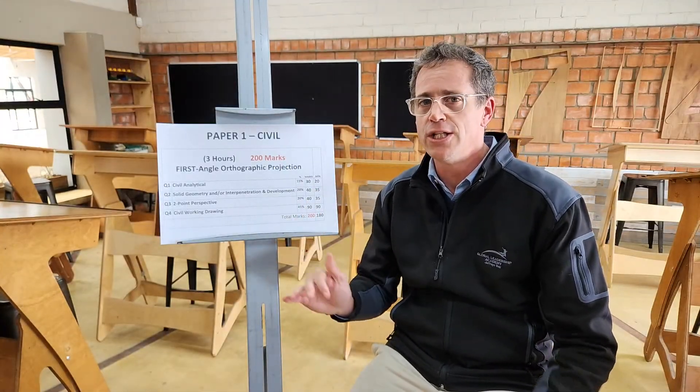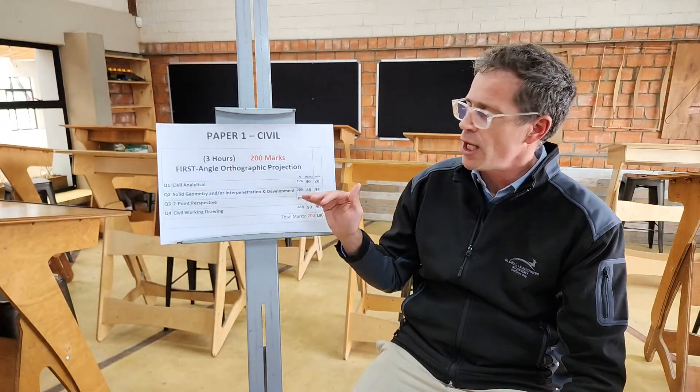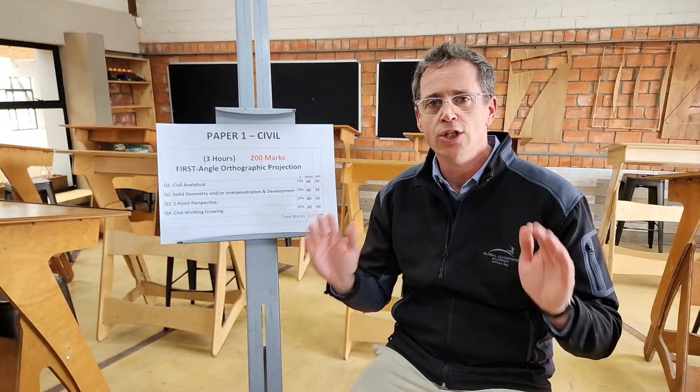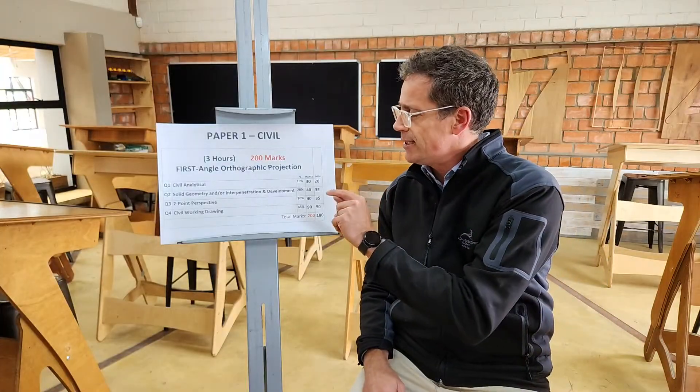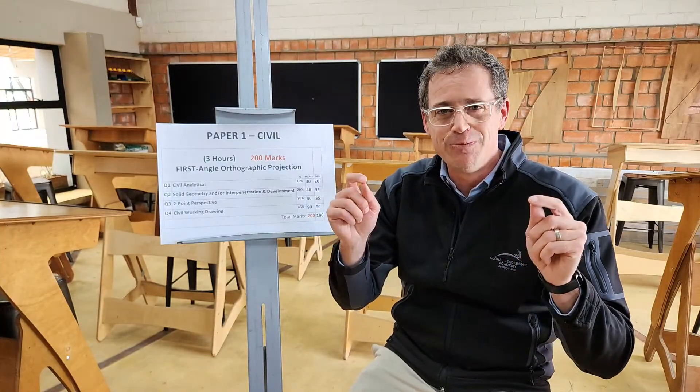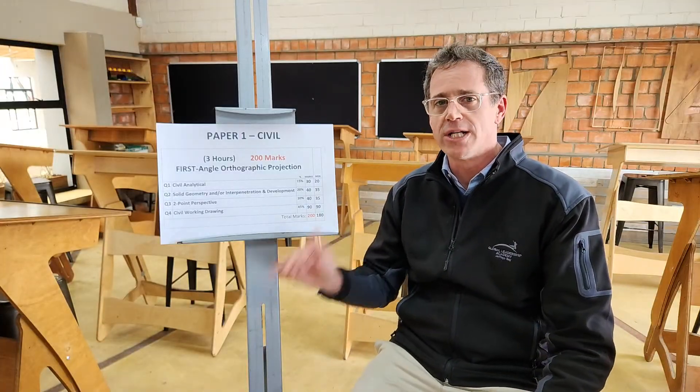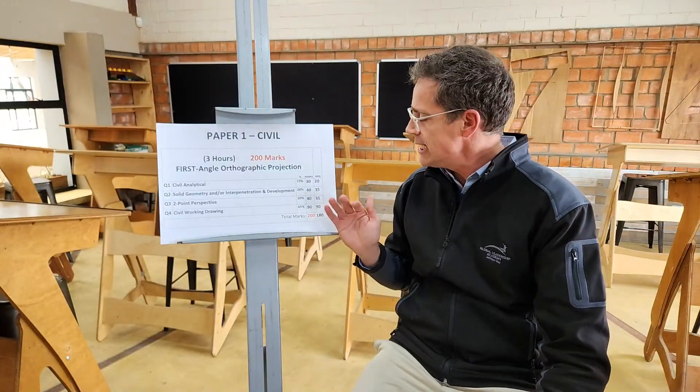Solid geometry and interpenetration development — 40 marks — are drawings you should know with confidence. Your third question is going to be a two-point perspective, definite certainty. I have great videos especially on the all-access membership where I show you the hack for nailing every two-point perspective. That's another 40 marks.